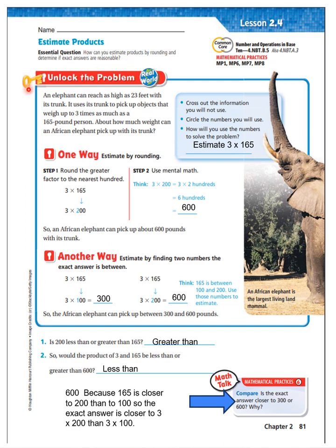Unlock the problem. An African elephant can reach as high as 23 feet with its trunk. It uses its trunk to pick up objects that weigh up to three times as much as a 165-pound person. About how much weight can an African elephant pick up with its trunk? Cross out the information you're not going to use — the 23 feet has nothing to do with what it's asking.